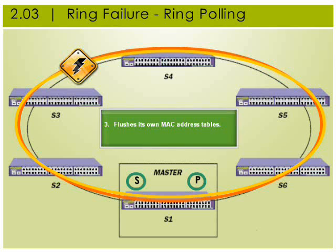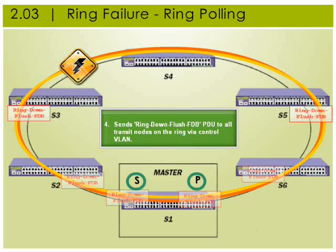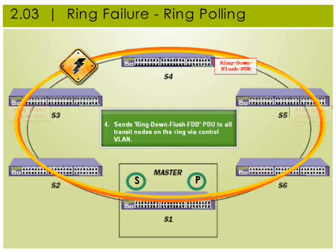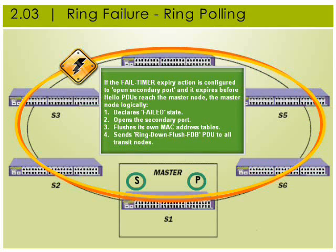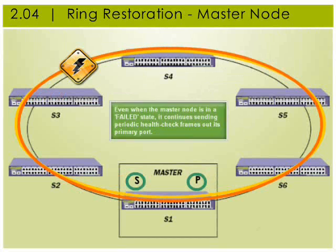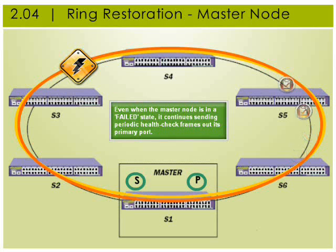The master then flushes its own MAC address tables and sends a ring down flush FDB to all transit nodes on the ring. Even when the master node is in a failed state, it continues sending periodic health check frames at its primary port.